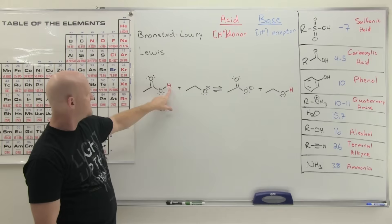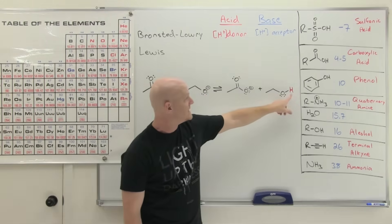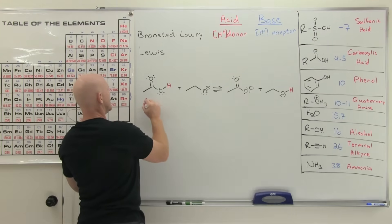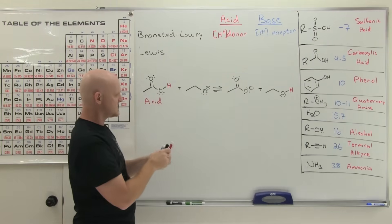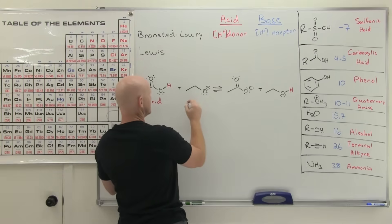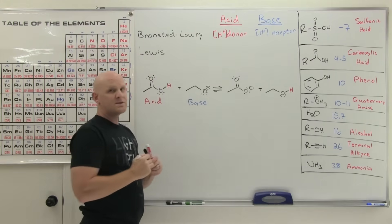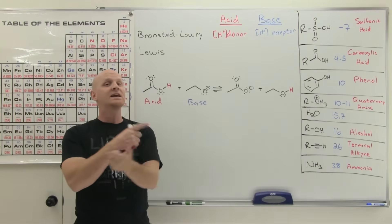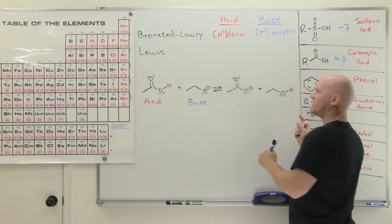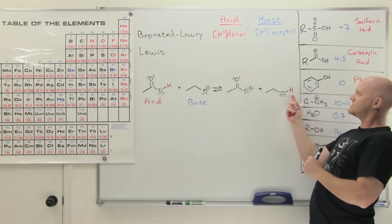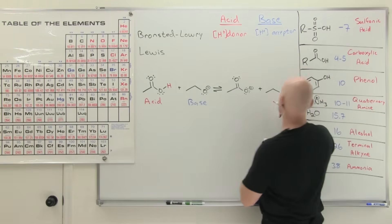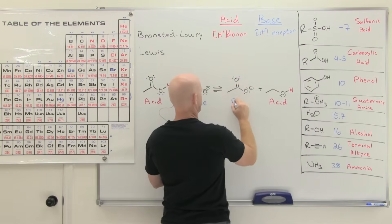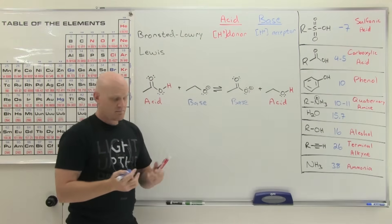In this case, the H is being transferred over to this oxygen, so the molecule on the reactant side donating that H-plus is the acid, and the one receiving it is the base. We typically look at these reactions as reversible, so you should be able to identify an acid and a base on either side. If we look at the reverse reaction, the molecule donating the H-plus would be the acid and the other the base.